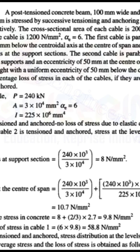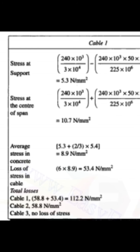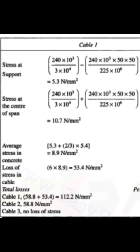When cable 3 is tensioned and anchored, we need to determine the stress distribution for cable 1 and cable 2 and find their average stresses. To find the loss of stresses in cable 1 and cable 2 when cable 3 is tensioned, we make a table. For cable 1 at the support, use p/A − p·e/I, and at the center, use p/A + p·e/I. With P = 240 × 10³ N, A = 3 × 10⁴ mm², e = 50 mm, and I = 225 × 10⁶ mm⁴.